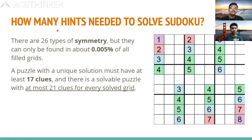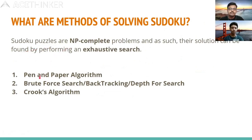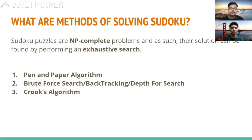How many hints do we need to solve a Sudoku? There are 26 types of symmetry, found in only 0.05% of puzzles. Symmetry helps solve puzzles faster. Importantly, Sudoku puzzles are NP-complete problems — meaning no polynomial time algorithm is known yet to solve them.